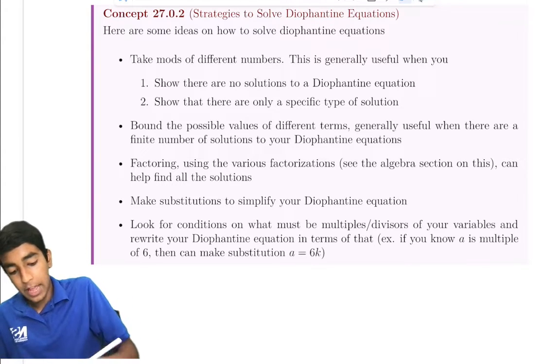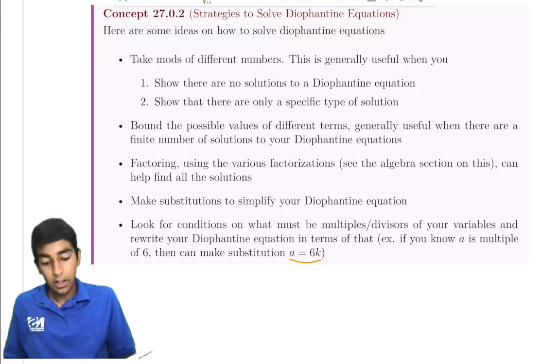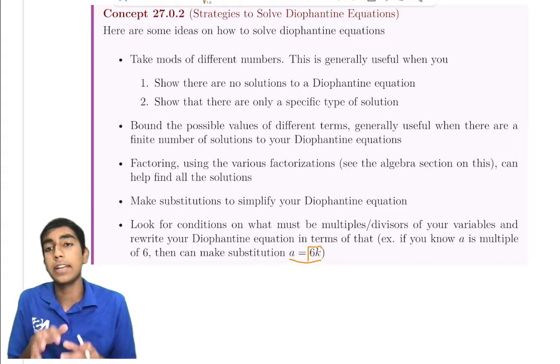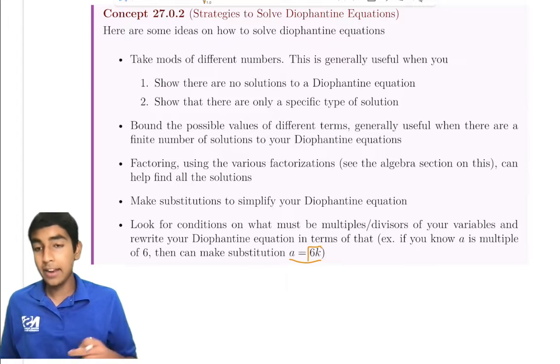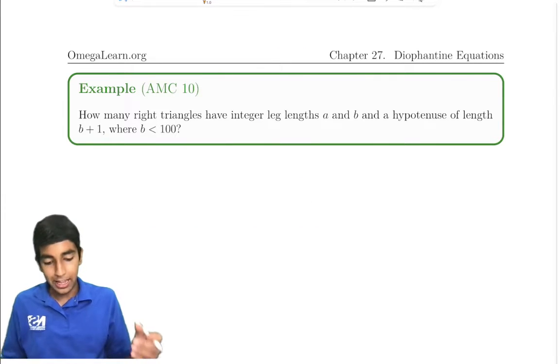Another key thing is you can look for conditions on what must be multiples or divisors of variables. So let's say you find out that a is 6k. You know it's a multiple of 6, so you can say that a is 6k. Instead of having this arbitrary condition, you now have tangible variables to back it up.